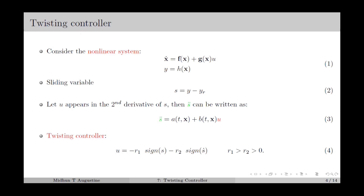Twisting controller comes under the category of higher order sliding mode control, and it is basically a second order SMC approach. In general, we can apply the twisting controller to nonlinear systems of the form as in equation number 1. We select the sliding variable as in equation number 2, which is chosen as the output error. The control input u appears in the second derivative of the sliding variable s. Then we can write s-double-dot as in equation number 3, where a and b are assumed to be bounded.